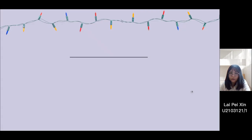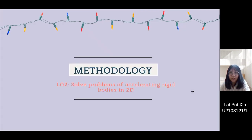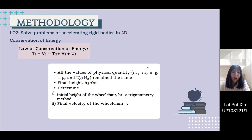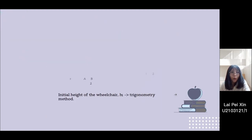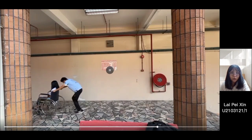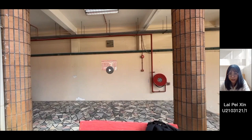Moving on to LO2, we solve problems of accelerating rigid bodies in 2D using the principle of conservation of energy. In this formula, T1 is the initial potential energy, V1 is the initial kinetic energy, T2 is the final potential energy, V2 is the final kinetic energy, and Uf is the work done against frictional force. The calculated final velocity is then compared with the final velocity obtained in LO1. We also use the planar kinetic equation of motion, manipulating two different surface conditions: rough and smooth.